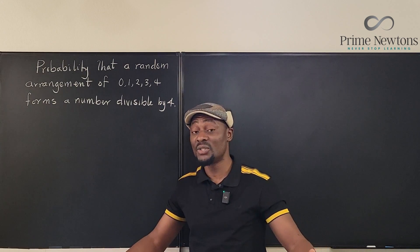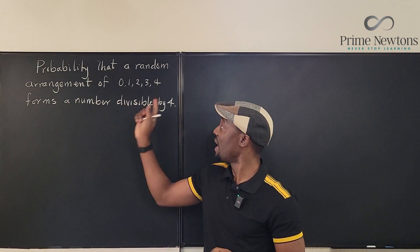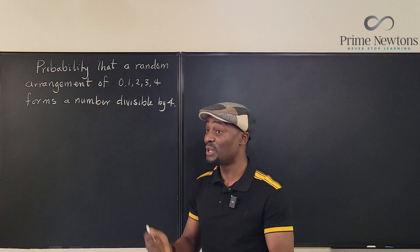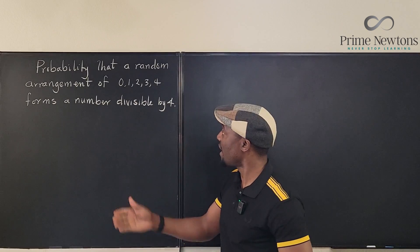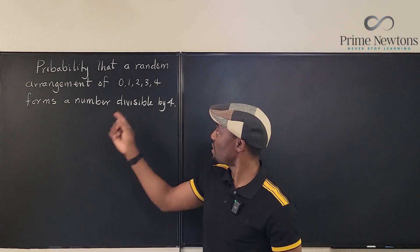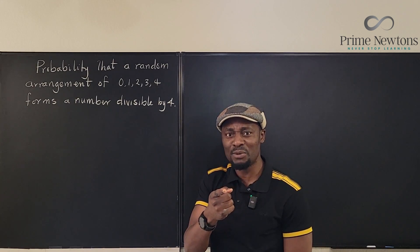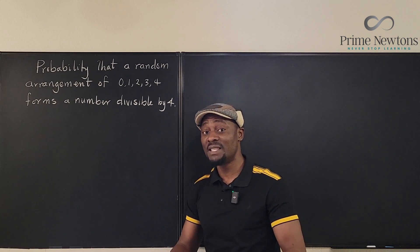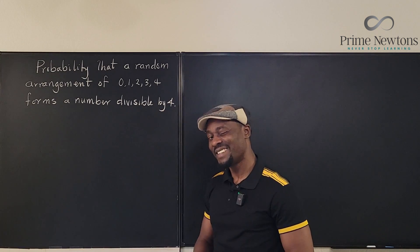That leaves us with so many things to consider. Number one, you have to know the number of five-digit numbers you can generate by rearranging these digits. Number two, you have to know that it has to be a five-digit number because what we're doing is just rearrangement. We're not leaving any digits out, and we're not repeating any digits — we're just rearranging what we have. We also need to know when a number is divisible by four, so we can calculate the probability of picking a random number divisible by four from the entire sample space.